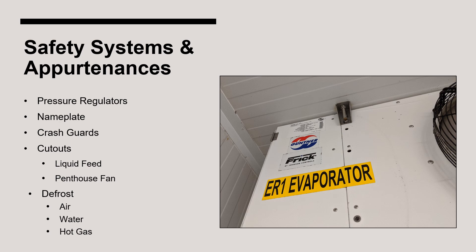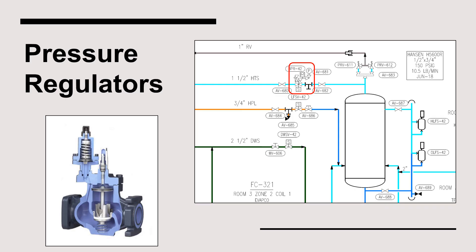As it relates to air cooling evaporators, there are a number of safety systems and other pertinences to be aware of. Many air cooling evaporators, typically those that are supplied by surge drums, will utilize a pressure regulator to maintain the desired evaporator pressure. Pressure regulators come in a variety of configurations to maintain upstream, downstream, or differential pressure.